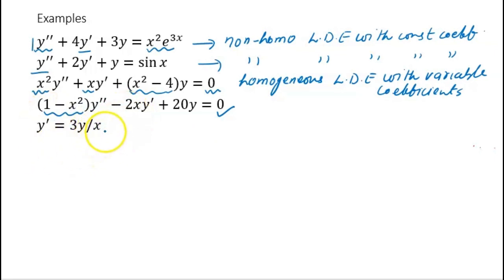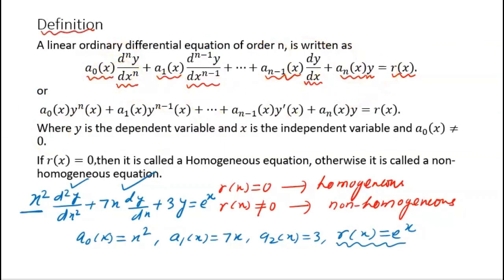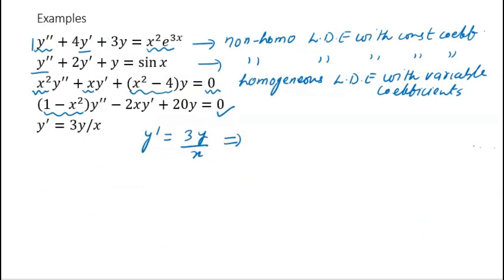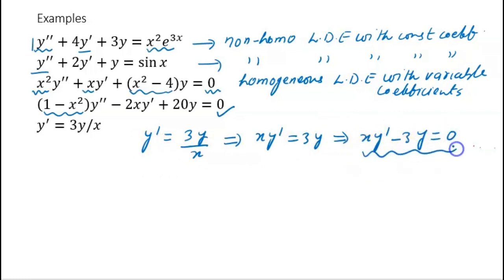Another example is also a homogeneous linear differential equation with variable coefficients. In the last example, students may make a mistake, so we need to rewrite it in standard form. It becomes xy' − 3y = 0. This is a homogeneous linear differential equation because the right-hand side is 0, and the coefficient x is variable, so it is a homogeneous linear differential equation with variable coefficient.